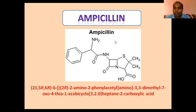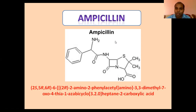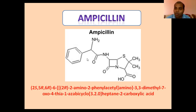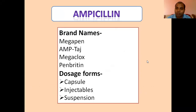Today we are going to start some other individual agents of penicillin — that is ampicillin. Ampicillin comes under the extended spectrum penicillin. As you know, penicillins are very much effective against gram positive bacteria, but ampicillin also has a little bit of effectiveness against gram negative bacteria. Ampicillin is also known as aminopenicillin, where an amino group is added to the benzyl penicillin parent structure. So benzyl penicillin with an amino group over the benzyl ring is ampicillin.